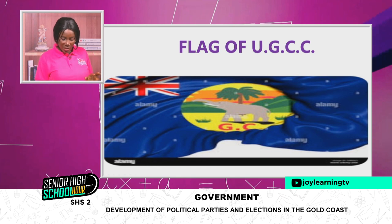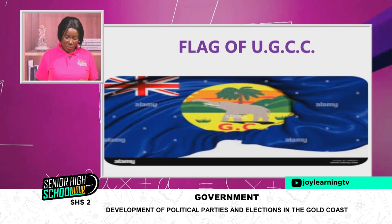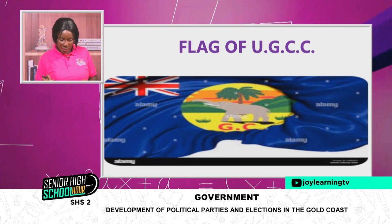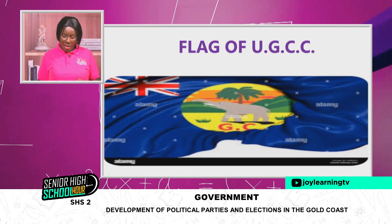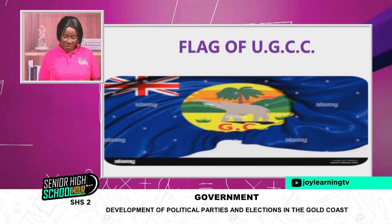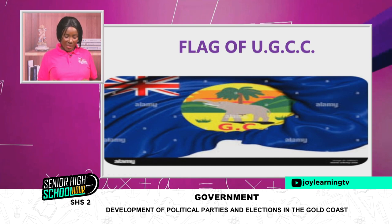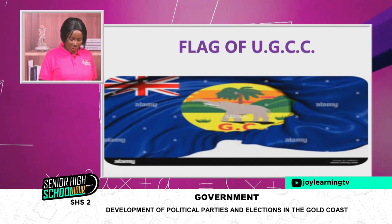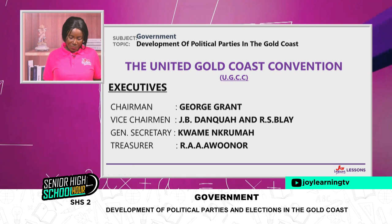The UGCC became the first political party in the Gold Coast in 1947. This is how their flag looks — the UGCC, United Gold Coast Convention.